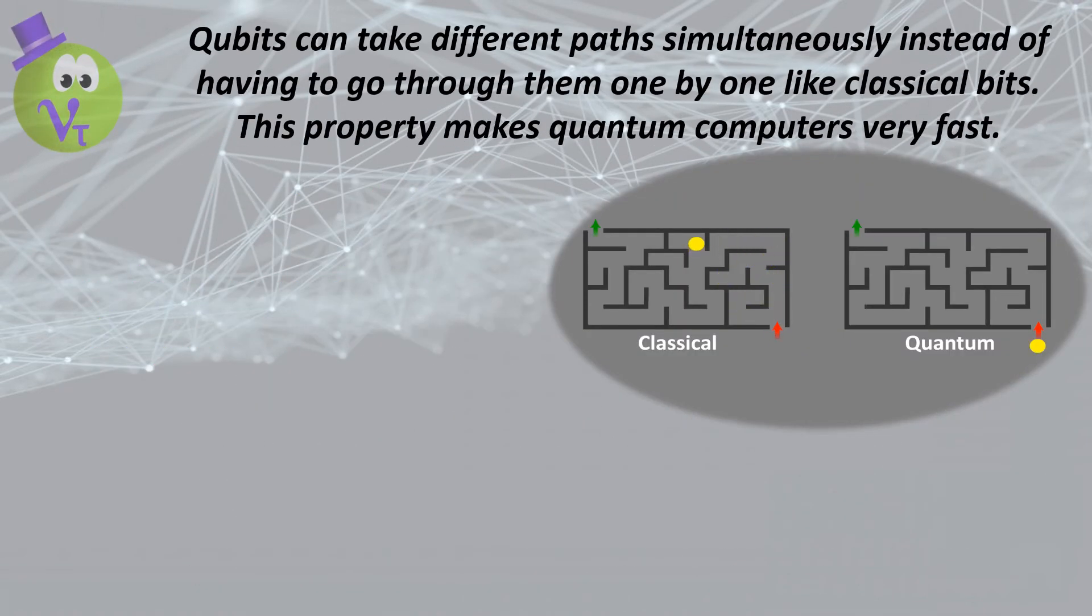Qubits can take different paths simultaneously instead of having to go through them one by one, like classical bits. This property makes quantum computers very fast.